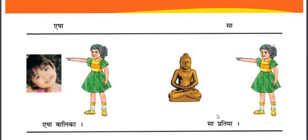Now the second part is Esha and Sa. Both are related with Feminine or Female Gender, means Streelink. So Esha and Sa — ye do Sarvanam hain jo Streelink ko darshate hain. Esha Balika — this is a Girl. Sa Pratima — that is a Statue.